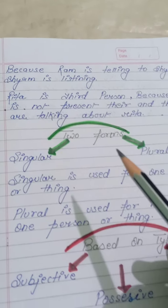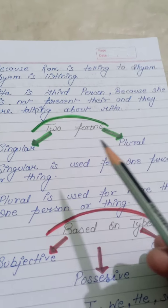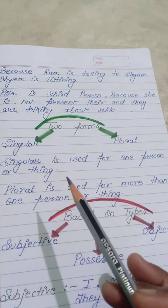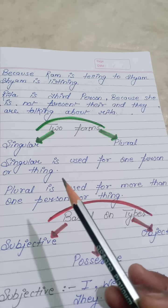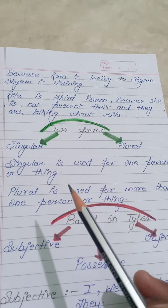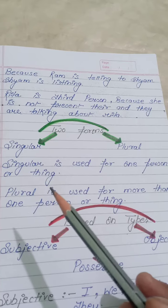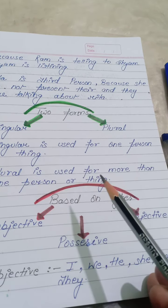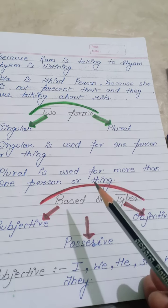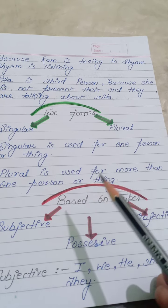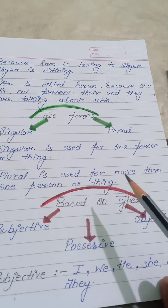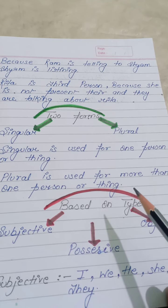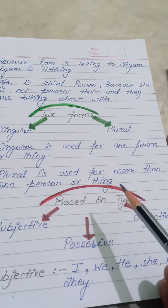Now, next: there are also two forms in pronoun — singular and plural. Singular is used for one person or thing. Plural is used for more than one person or thing. Words like 'we,' 'our,' 'ours' come into the plural form.